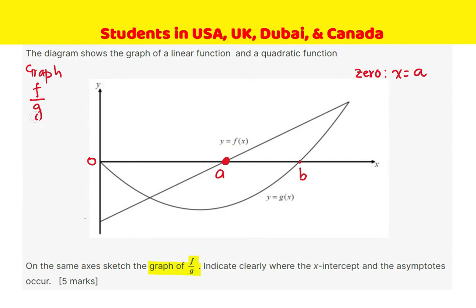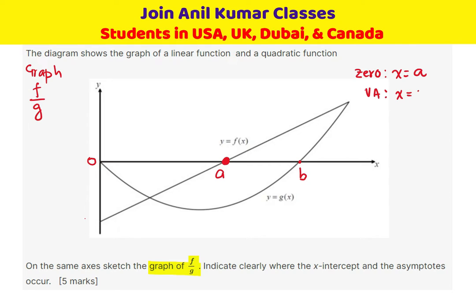The divisor is G, a parabola. Wherever the divisor has a zero, the function will have a vertical asymptote. So we have a vertical asymptote at x equals 0 and x equals B. We can draw vertical asymptotes at these points.